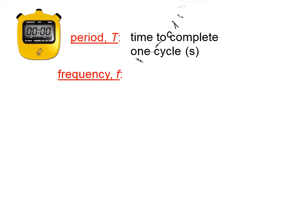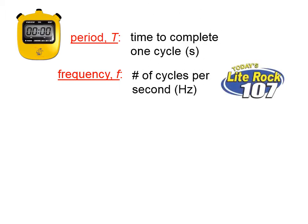Frequency, on the other hand, symbolized by lowercase f, is the number of cycles per second. Typically the unit that we want to use for frequency is hertz. The numerical relationship between the period and the frequency is that they are inverses of each other.